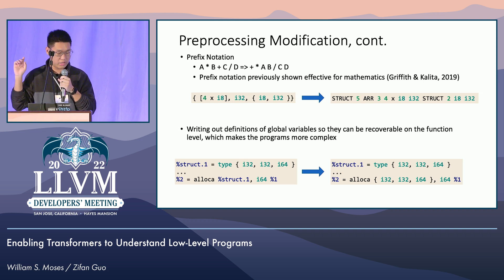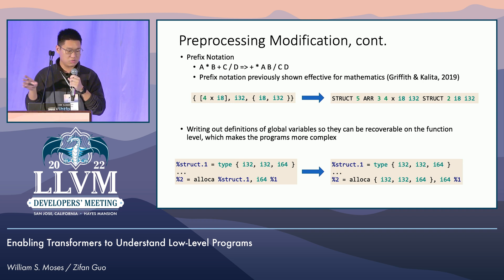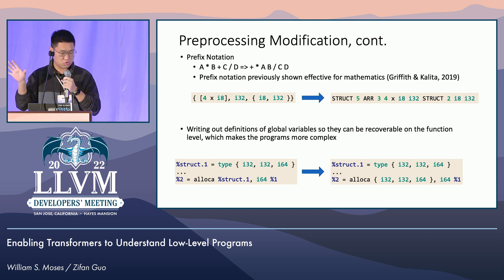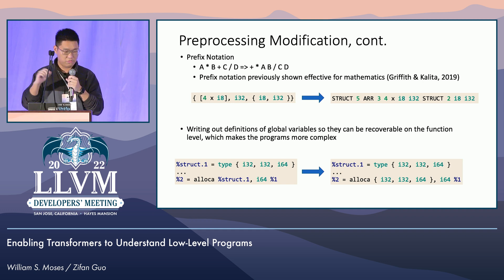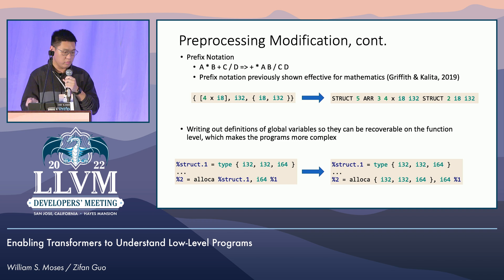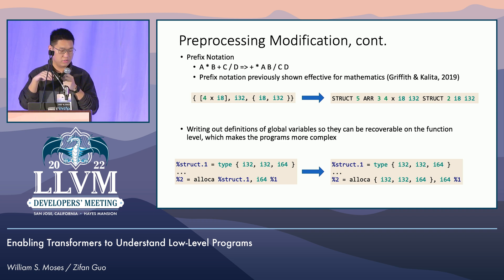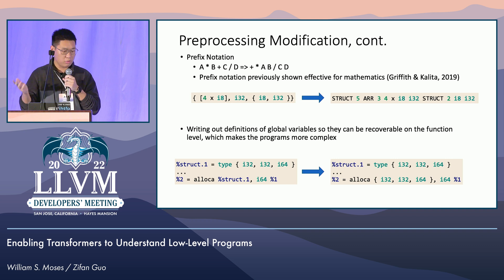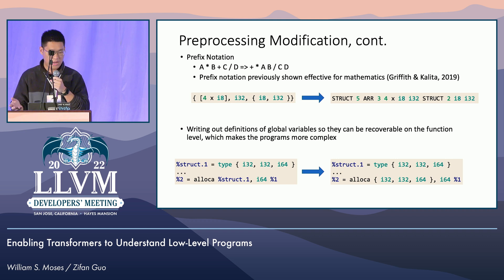In the prefix notation, there's a keyword showing what the data structure is, followed by the length of the data structure, and the original can be reconstructed from our modified prefix notation. We also write out the definition of global variables so they can be recoverable at the function level — otherwise they're lost forever if we don't fine-tune at the whole-program level. This makes the program more complex but makes them compilable, which is a trade-off I'll talk about later.